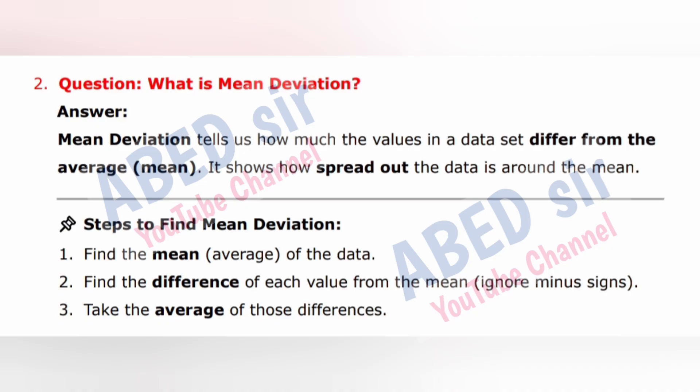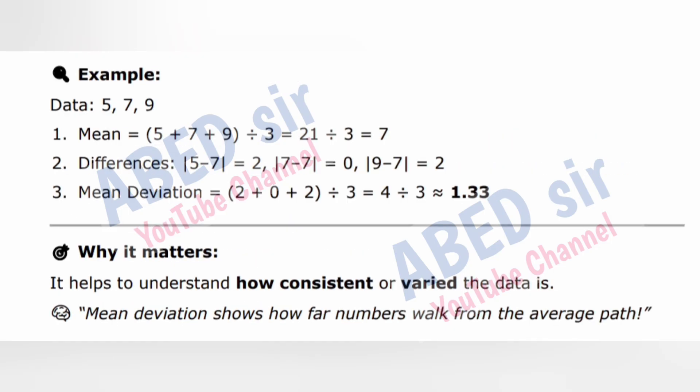Next important short question: What is mean deviation? Answer: Mean deviation tells us how much the values in a data set differ from the average mean. It shows how spread out the data is around the mean. Steps to find mean deviation: 1. Find the mean of the data. 2. Find the difference of each value from the mean — ignore minus signs. 3. Take the average of those differences.